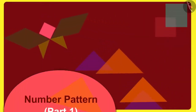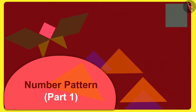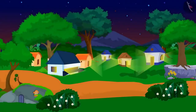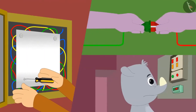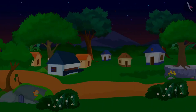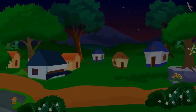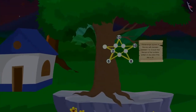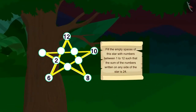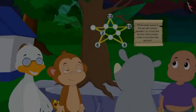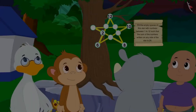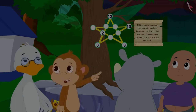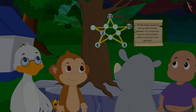Hello children. In this video, we will learn about number patterns. One day, there was a sudden electricity failure in Champapur. All the villagers tried hard to get the electricity connected but no one understood the reason for the power cut. It was night and darkness spread throughout the village. Then the villagers saw a star on the banyan tree of the village. There are some numbers written on this star and there are some empty spaces too, said Badbole uncle. But what could these numbers mean uncle? Babban asked.